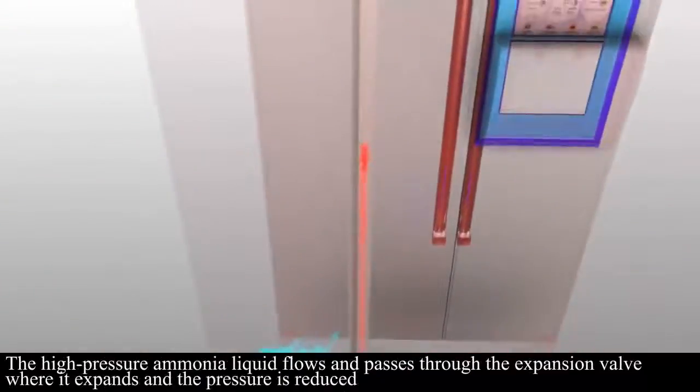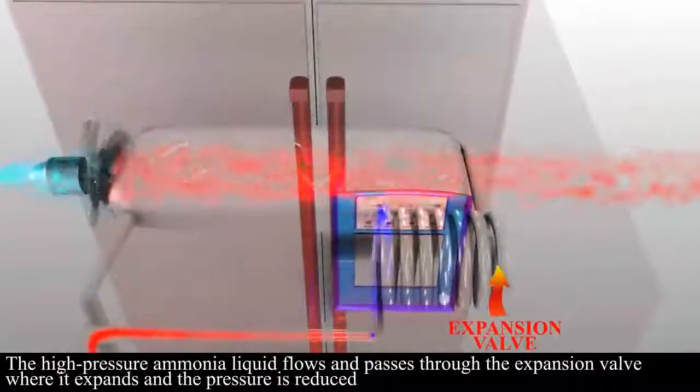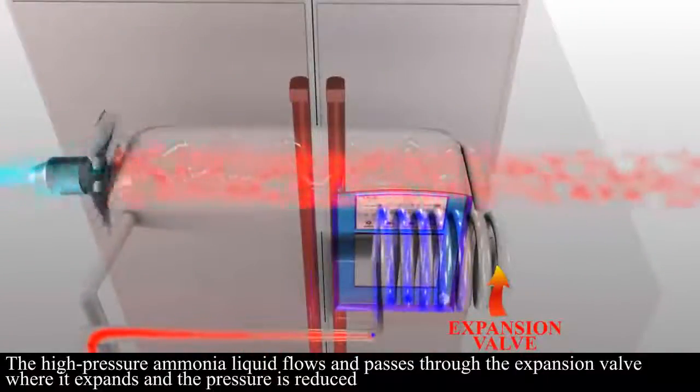The high pressure ammonia liquid flows and passes through the expansion valve where it expands and the pressure is reduced.